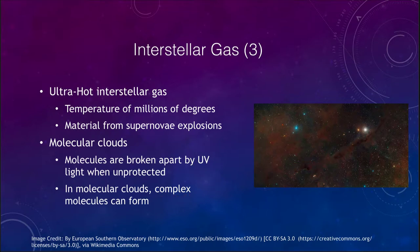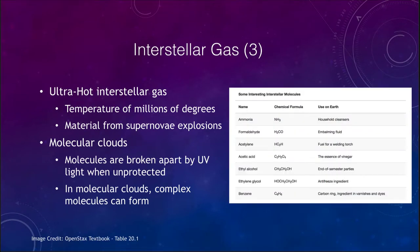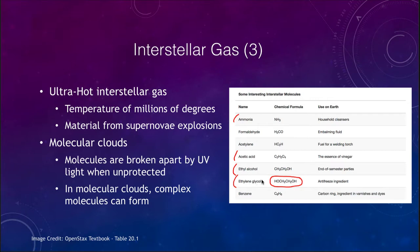Some examples of what we find within molecular clouds include ammonia, which is used in household cleaners, as well as acetic acid (vinegar), different types of alcohols, and antifreeze. Things like ethylene glycol and ethyl alcohol have very complex formulae requiring lots of atoms, meaning they are very easily broken apart by ultraviolet light. So it takes a lot of protection for them to be able to remain together inside these clouds.